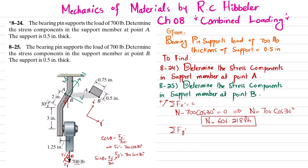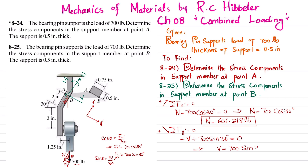For the second equilibrium equation — sum of forces along y-dash equals zero — V acts upward and Fy-dash acts downward. So negative V plus 700 sine 30 degrees equals zero. Therefore V equals 700 times sine 30 degrees, and the shear force V equals 350 pounds.